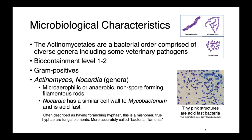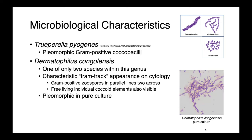Trueperella pyogenes, formerly known as Arcanobacterium pyogenes, are pleomorphic gram-positive coccobacilli, so they're variable in their morphology. Dermatophilus congolensis is one of only two species within this genus and has a very characteristic appearance on cytology. What you'll see clinically are the presence of these tram-track arranged zoospores, like this cartoon up on the right. This looks really unlike anything else and is almost pathognomonic when seen microscopically.